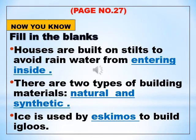Let's move on to page number 27. Fill in the blanks. Houses are built on stilts to avoid rainwater from entering inside. There are two types of building material: natural and synthetic. Ice is used by Eskimos to build igloos.